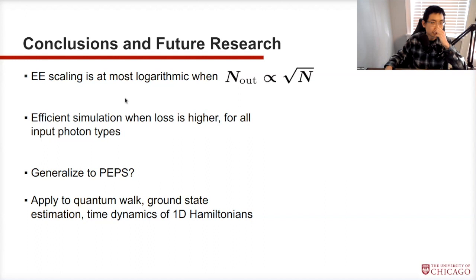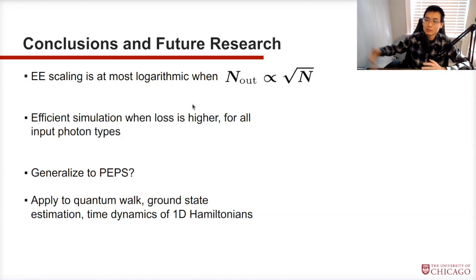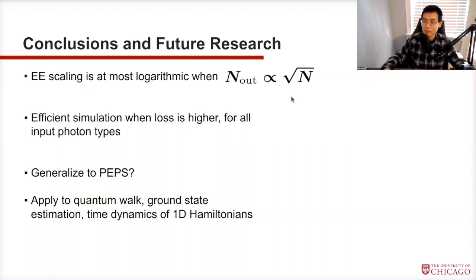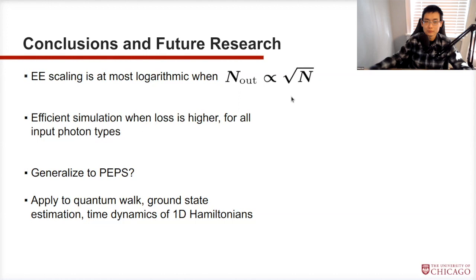We have a few caveats: the polynomial order of the complexity is still pretty large — actually cubic in the bond dimension — so cubic complexity is not insignificant for classical computing. Also, our simulation algorithm cannot currently simulate the experiments carried out by Xanadu, which are already too hard to simulate. What our study does show is that when they scale up, the simulation won't become exponentially harder — you'd only expect polynomial advantage.